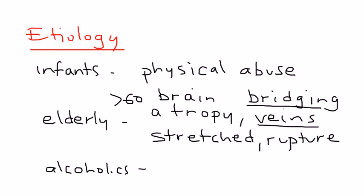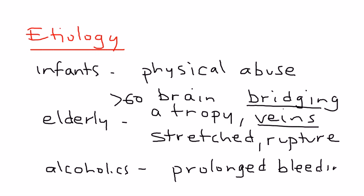Alcoholics, unfortunately, because of very poor nutrition and alcohol misuse, can have prolonged bleeding times, which can lead to a disastrous effect. Alcoholics can also have brain atrophy, and that cerebral atrophy can lead to tension on the bridging veins in the same way as the elderly.